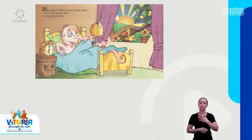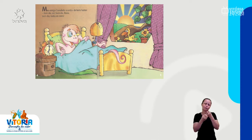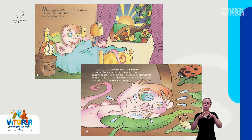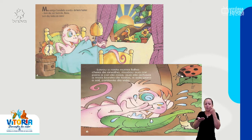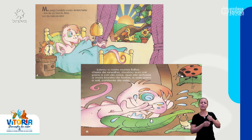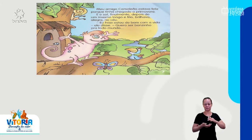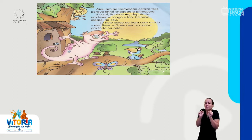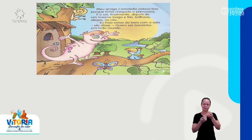Meu amigo camaleão acordou de bom humor. Bom dia, sol! Bom dia, flores! Bom dia, todas as cores! Lavou o rosto numa folha cheia de orvalho, mudou sua cor para a cor de rosa, que ele achava a mais bonita de todas, e saiu para o sol contente da vida. Meu amigo camaleão estava feliz porque tinha chegado a primavera, e o sol, finalmente, depois de um inverno longo e frio, brilhava alegre no céu. Hoje eu estou de bem com a vida, ele disse. Quero ser bonzinho para todo mundo.